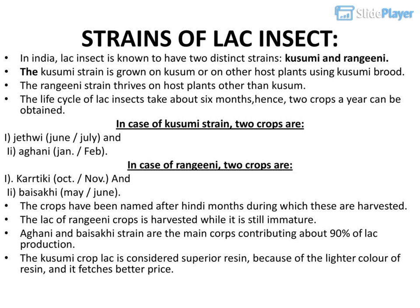In India, the lac insect is known to have two distinct strains: kusumi and rangini. The kusumi strain is grown on kusum or on other host plants using kusumi brood, while the rangini strain thrives on host plants other than kusum. The life cycle takes about six months, so two crops a year can be obtained. In the case of the kusumi strain, two crops are: 1. Jethi (June–July), and 2. Agani (January–February).